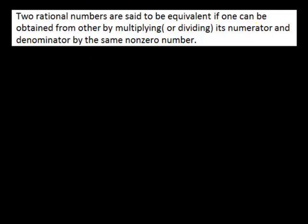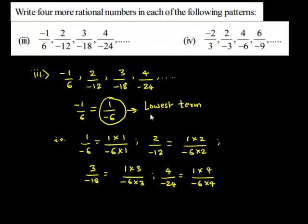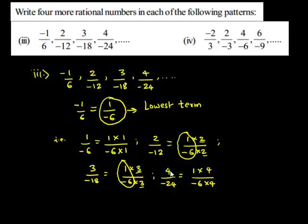So, as you can see here, 2 upon negative 12 is obtained when 1 upon negative 6 is multiplied by 2 in the numerator and in the denominator. Similarly, 3 upon negative 18 is obtained when 1 upon negative 6 is multiplied by 3 both in the numerator and in the denominator. And 4 upon negative 24 is obtained when 1 upon negative 6 is multiplied by 4 in the numerator and in the denominator.